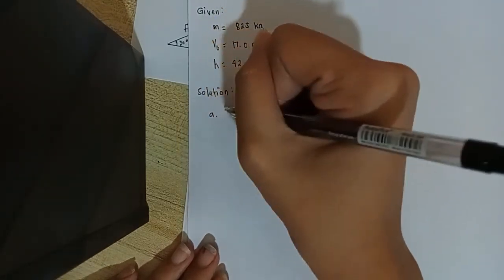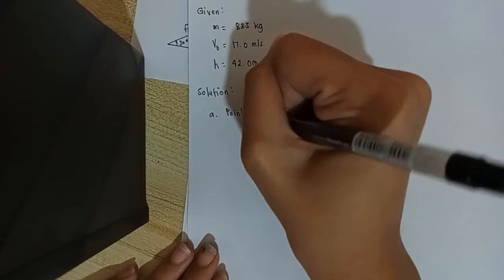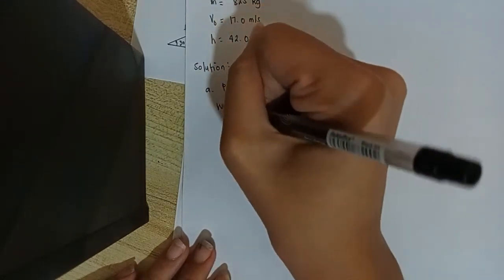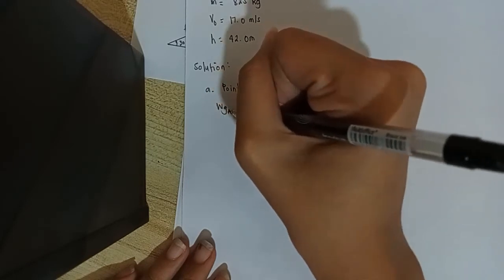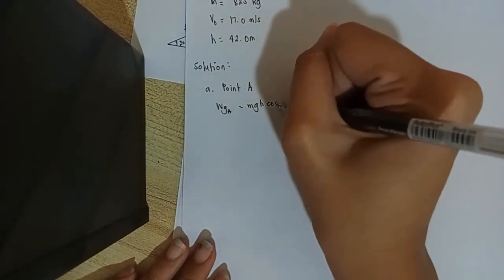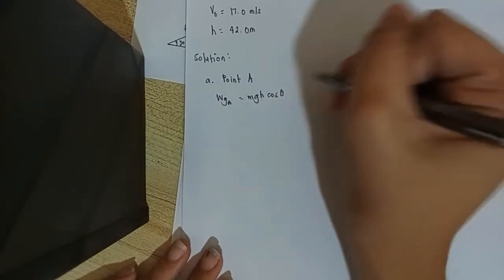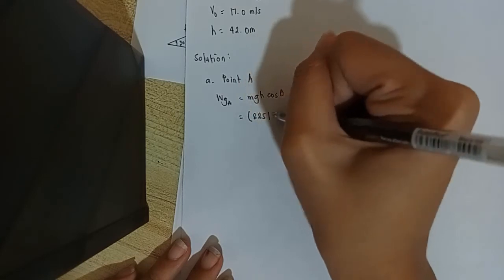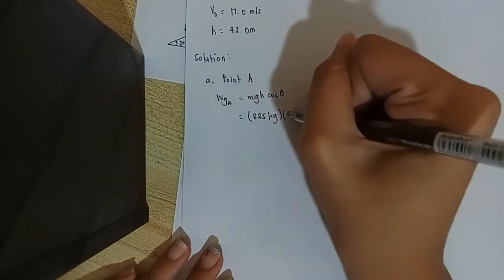Solution for letter A. Point A. Work is equal to mgh cos theta. That's our formula for point A.